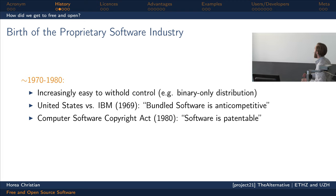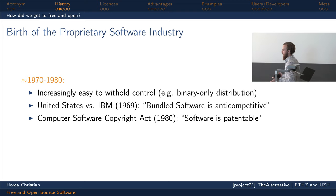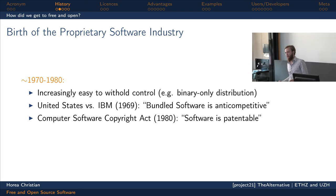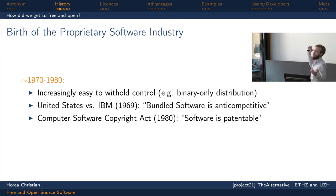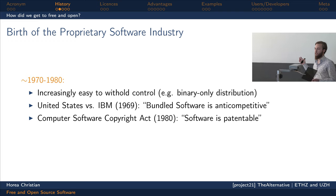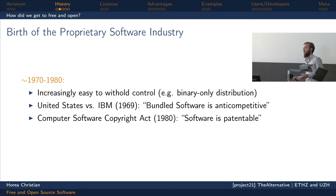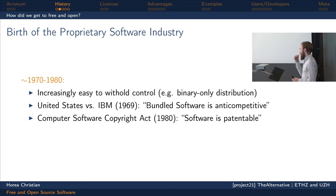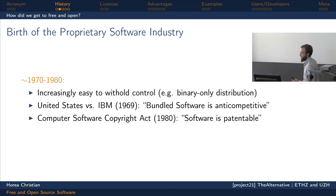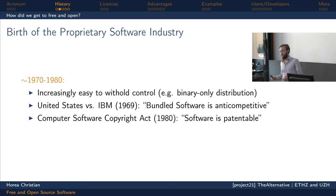Two court rulings notably determined, first, that bundled software is anti-competitive — meaning hardware companies could no longer just supply software alongside everything else. This opened the way for pure software companies to emerge. A later act determined that software can receive a patent, meaning many companies now have the tools and technical means to withhold from users exactly what a program is doing.